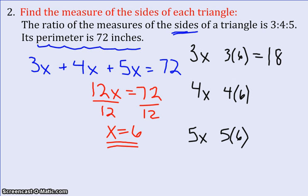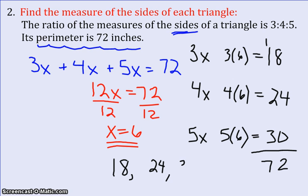So 3 times 6 is 18, 4 times 6 is 24, 5 times 6 is 30. Does 18 plus 24 plus 30 add up to 72? It sure does. So the answer to this problem would be 18, 24, and 30. That would be the side lengths of my triangle.